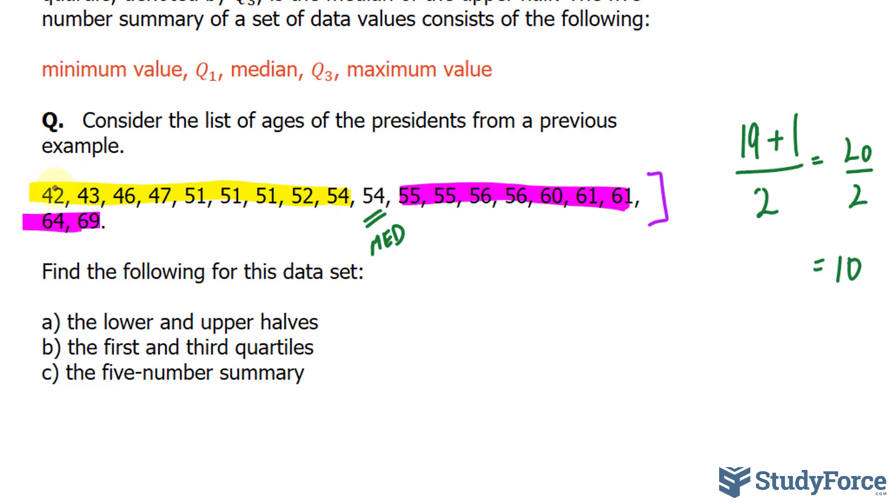How many observations do we have? 1, 2, 3, 4, 5, 6, 7, 8, 9. Again, an odd set. That's good. So we can take 9 plus 1 divided by 2, and that is 10 over 2.